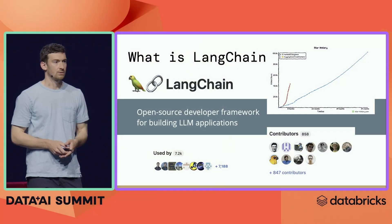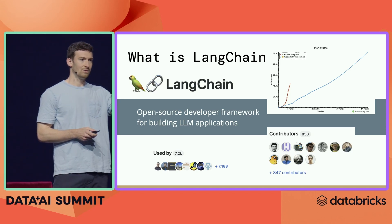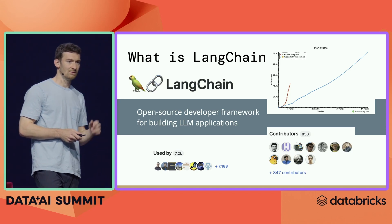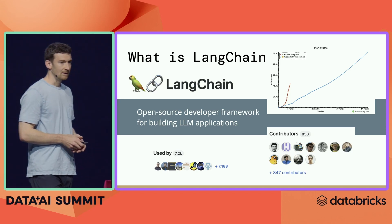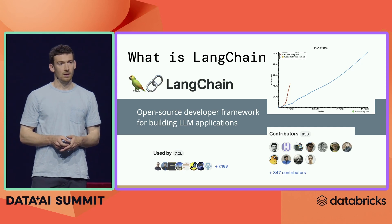So what is LangChain? LangChain is an open source developer framework for building LLM applications. We started as an open source Python package in October of 2022, right in between Stable Diffusion and ChatGPT, and then we quickly expanded to have a TypeScript package as well.